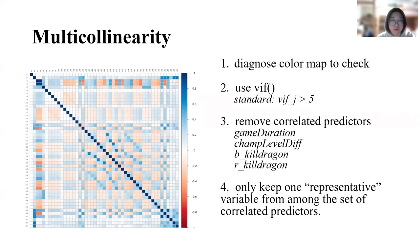At our first step, we want to check the multicollinearity. We make a color map to check the predictor's correlation and use VIF function to see if there are some predictors with value larger than 5. We remove these correlated predictors to achieve our goal that keeps only one representative variable from among the set of correlated predictors.